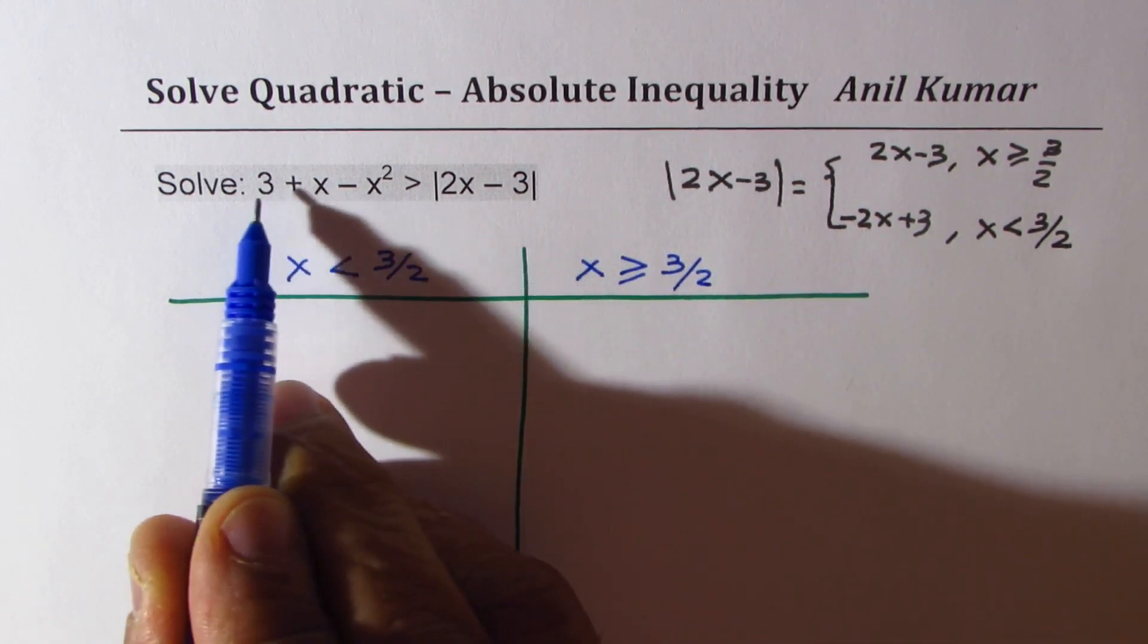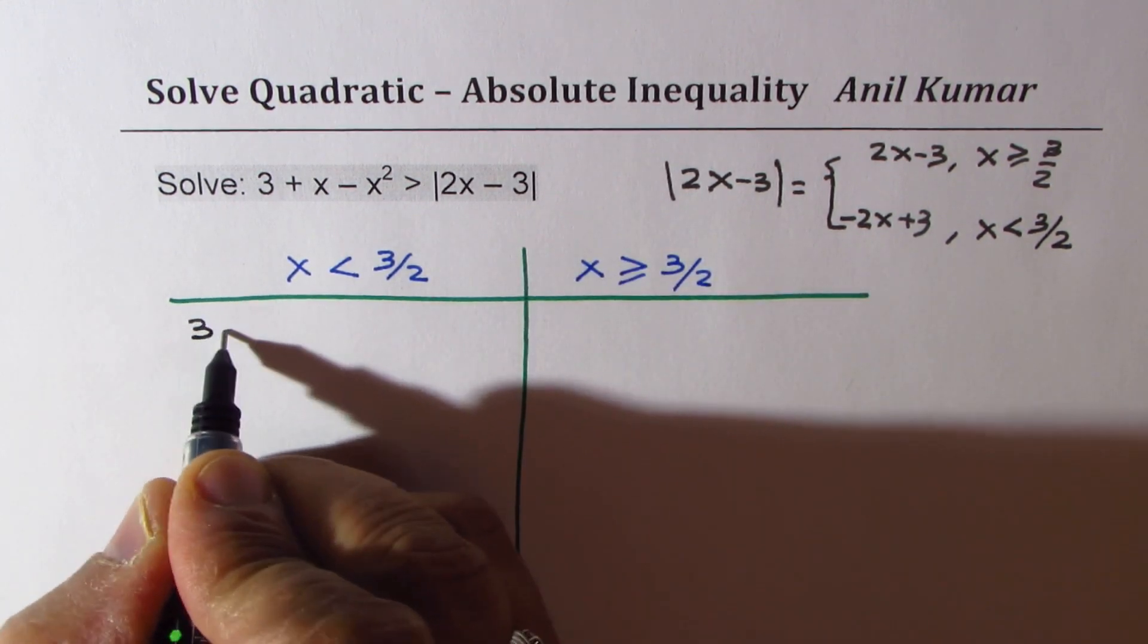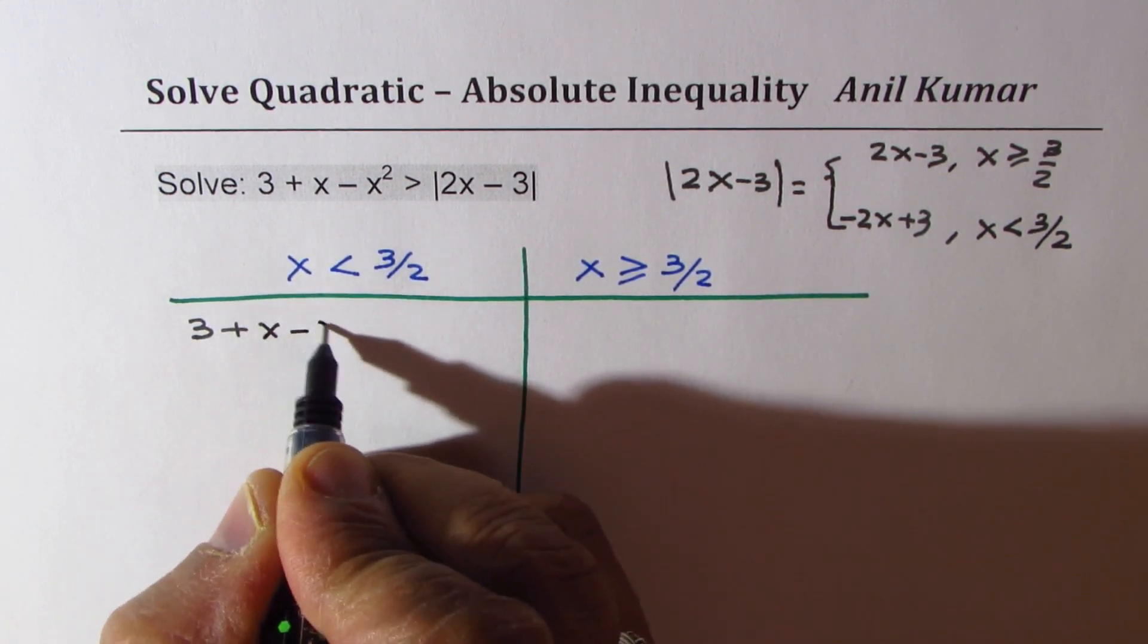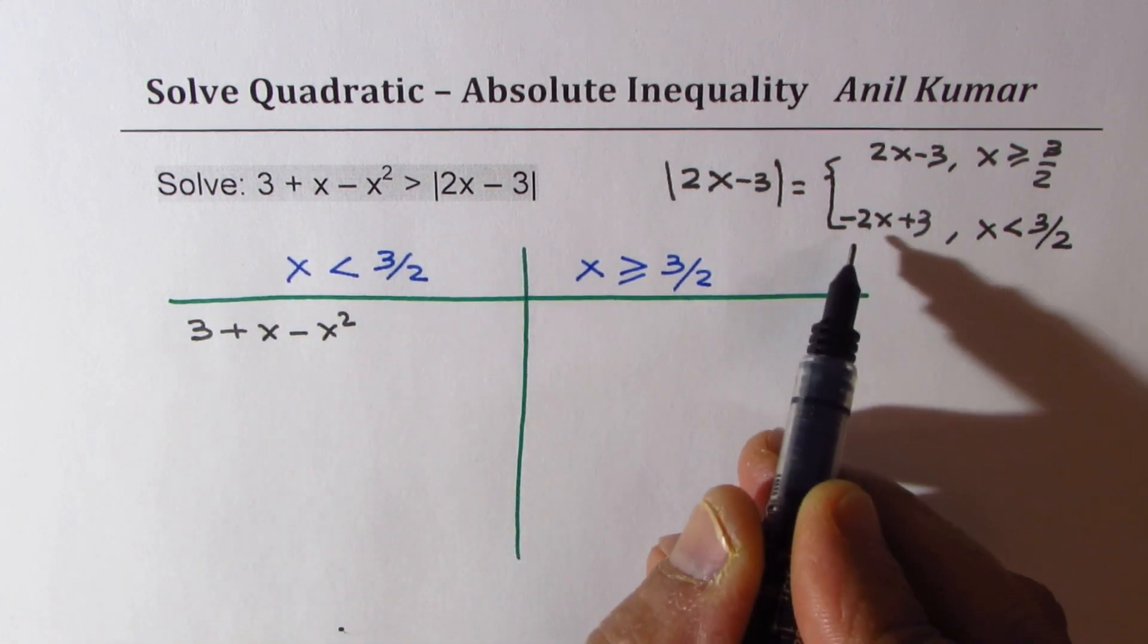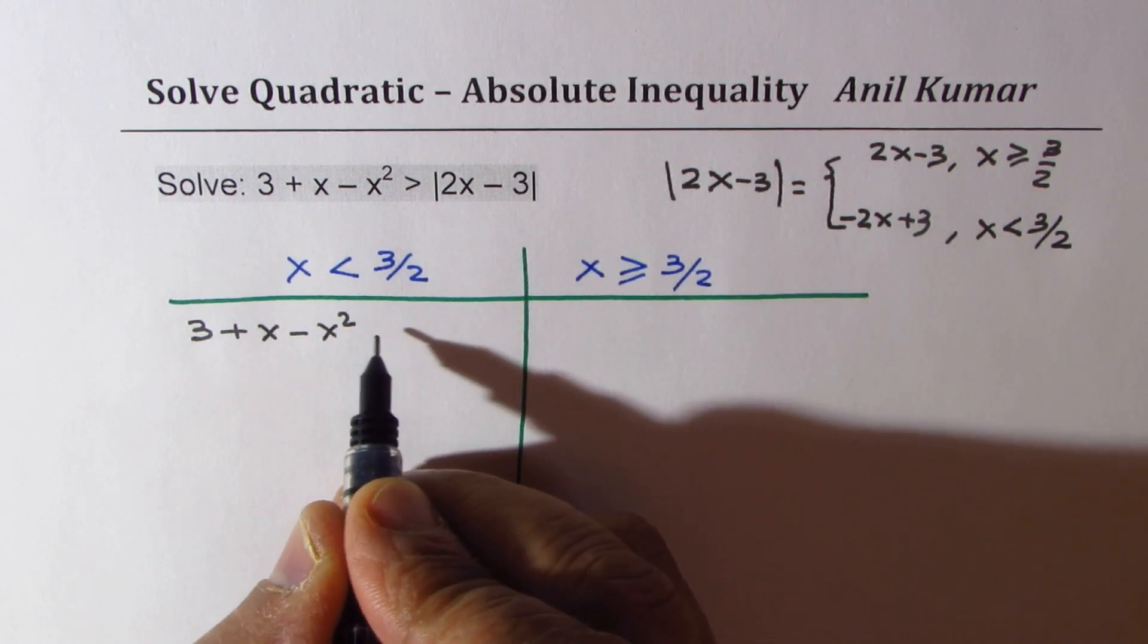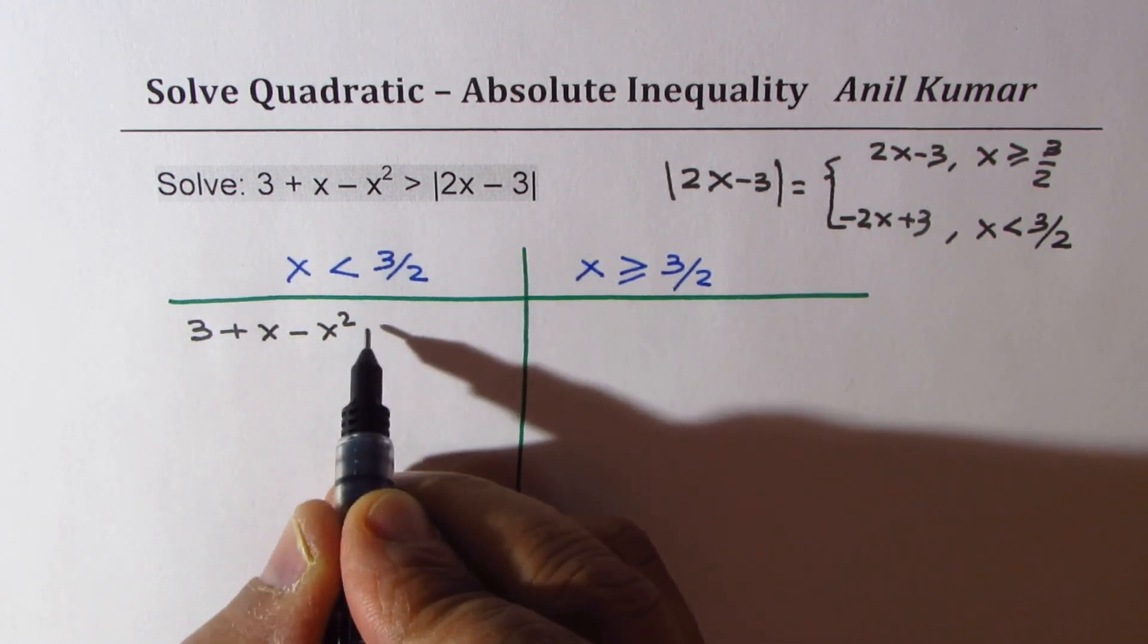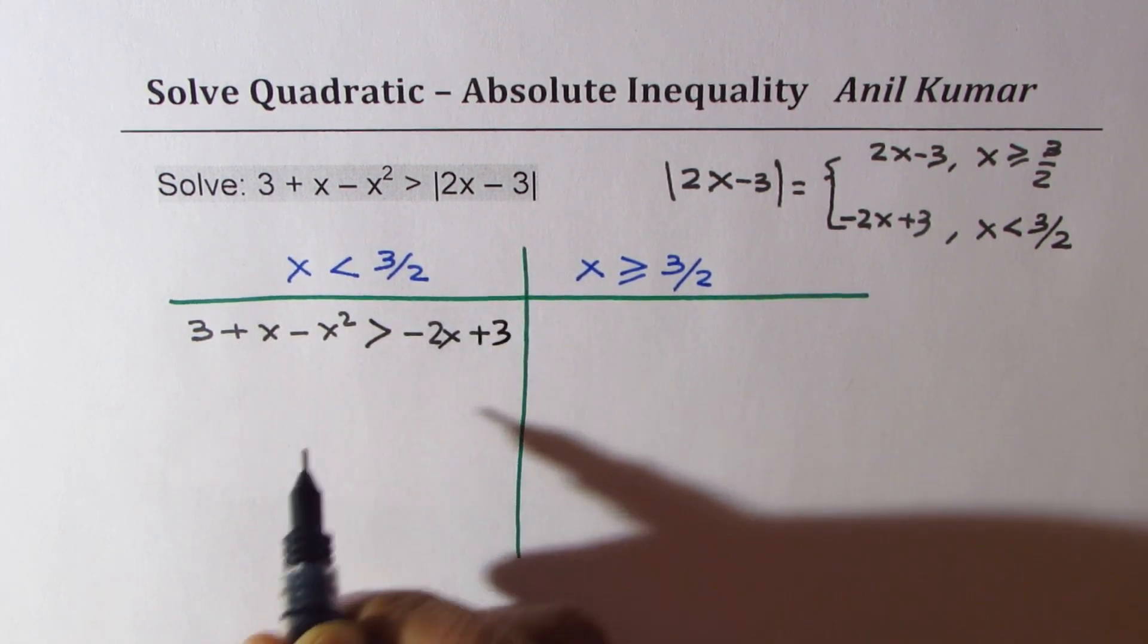In that case, we can rewrite the equation as 3 plus x minus x squared. Now when you are considering the left side of 3 by 2, we have to take the negative of 2x minus 3, which makes the equation minus 2x plus 3.